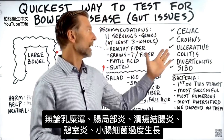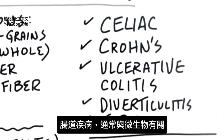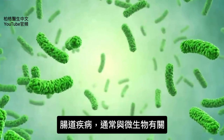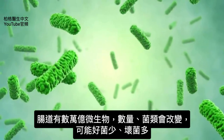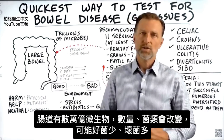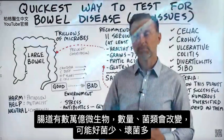Whether you have celiac, Crohn's, ulcerative colitis, diverticulitis, or small intestinal bacterial overgrowth — when we're talking about bowel disease, it usually relates to your microbes. You have trillions of microbes in your gut, and there could be some alteration in the amounts or the type of microbes.